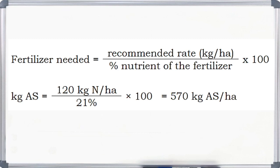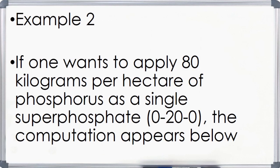Let us substitute the formula. Fertilizer needed for ammonium sulfate equals 120 kg of nitrogen per hectare divided by 21%, multiplied by 100. The result is 570 kg of ammonium sulfate per hectare. The same formula may be used with any of the materials containing nitrogen, phosphorus, or potassium.